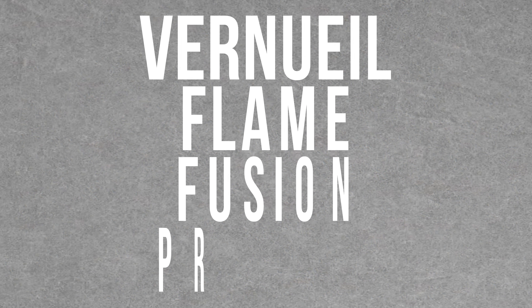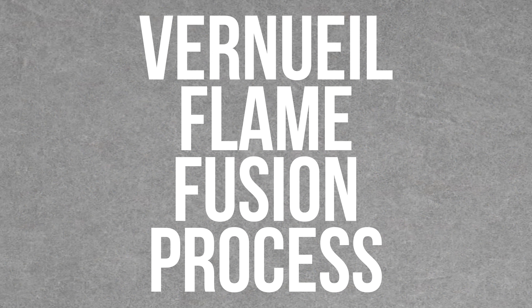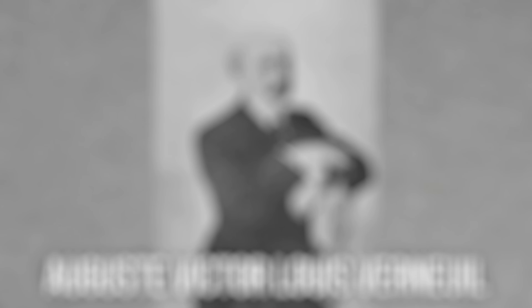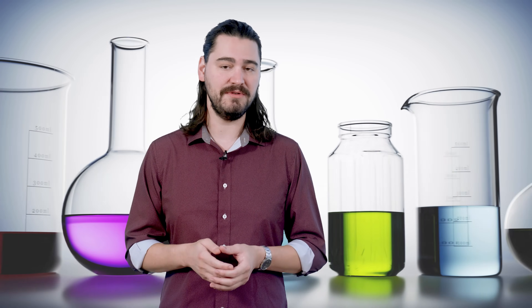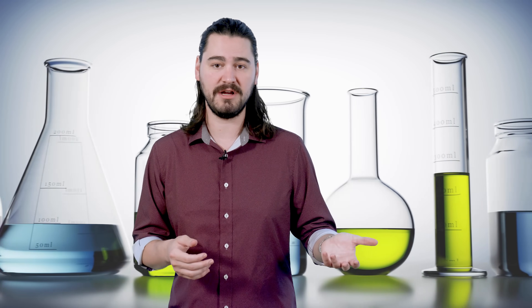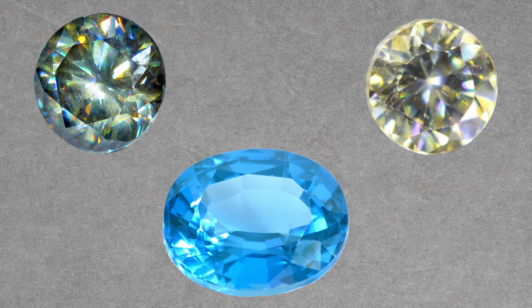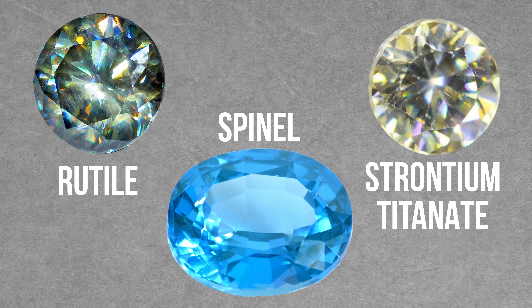The primary method for synthesizing ruby and sapphire is called the Verneuil flame fusion process, named after the man who first synthesized ruby in 1902. It was the first commercial process used, and it's still very important today due to its low production cost and high growth rate. Other stones made with this process are spinel, rutile, and strontium titanate.